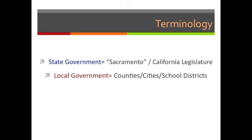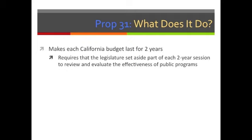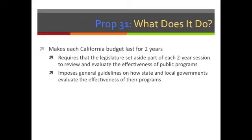What does Prop 31 do? It makes each California budget last for two years rather than creating a new budget every year. It requires the legislature to set aside part of the two-year session to review and evaluate the effectiveness of public programs and describe how their budgets meet various objectives. It also imposes guidelines on how state and local governments evaluate the effectiveness of their programs.